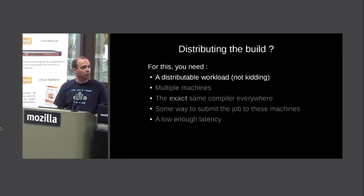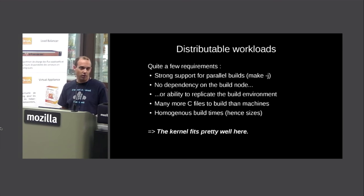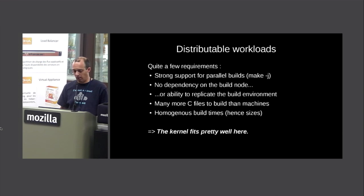To distribute your workload on multiple machines, first you need a distributable workload. In practice it's a real difficulty, because it requires that your project supports parallel builds. Many projects — not the kernel fortunately — do not easily support parallel builds, or they have a level of dependencies which significantly limits the ability to parallelize.